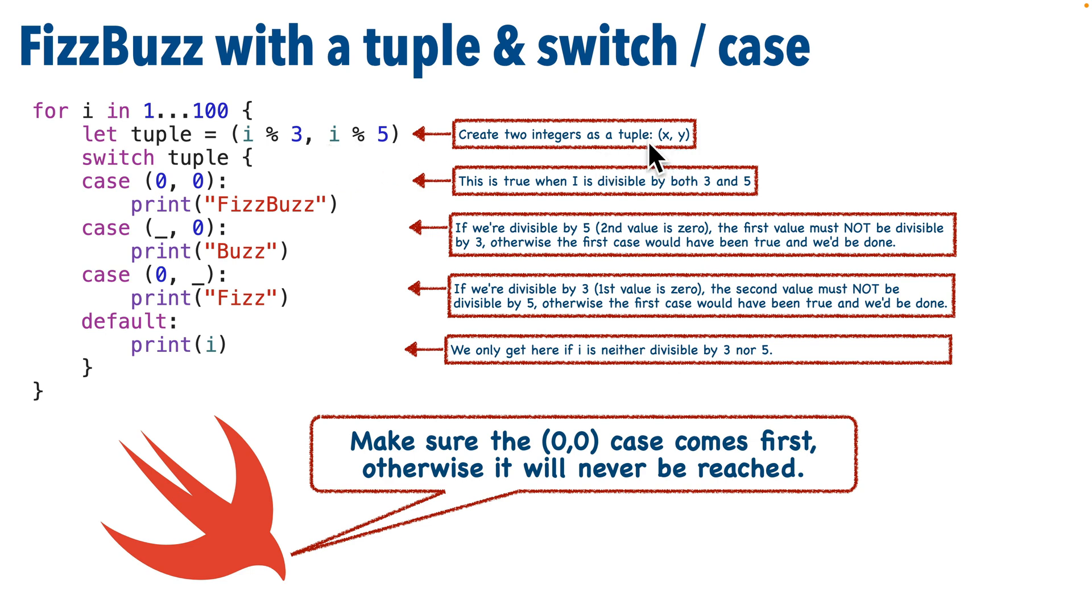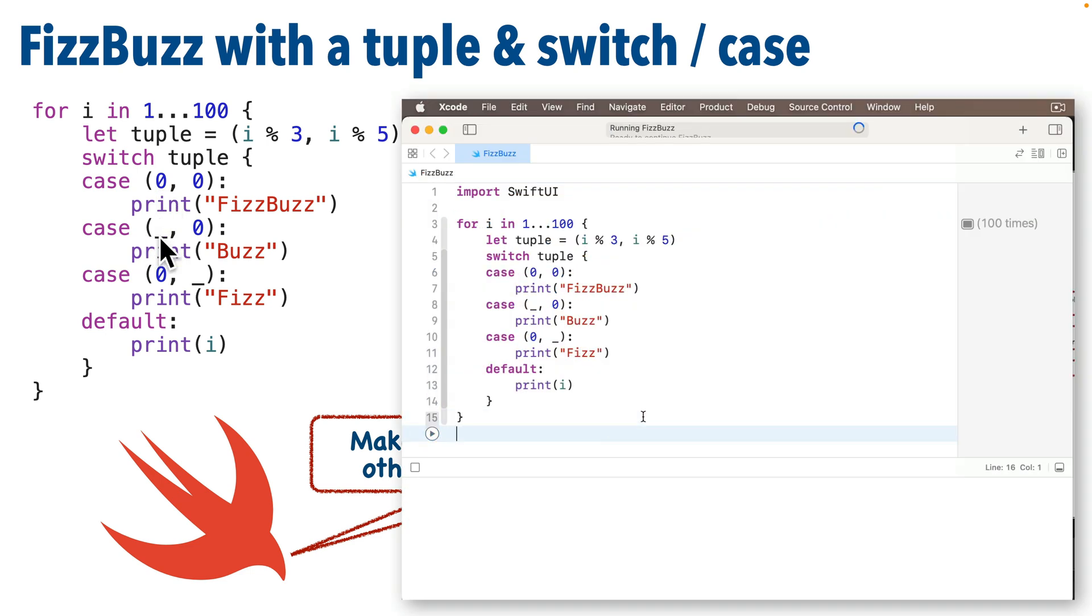Now, once again, it's important in the way that I wrote this switch case to look first at the case where the two numbers in the tuple are both zero. This is the FizzBuzz case. If this is true, then I'm done looking at any other cases and I exit the switch statement. Otherwise, if I look at this case, the underscore means this value can be anything. But if I'm here where the second value in the tuple is equal to zero, then I'm 100% sure that that first number is not zero. Otherwise, this first case would have been true.